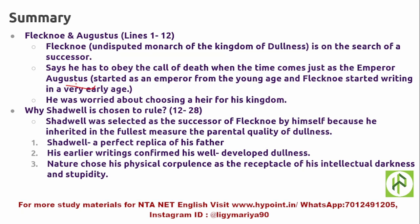Augustus took over his empire at a very young age, just as Flecknoe started writing at a very early age. Flecknoe is worried about choosing an heir for his kingdom — to whom he should entrust the empire he built so effortfully. All of this is presented in a mocking and sarcastic manner, satirizing his theme through witty representation.